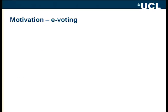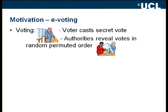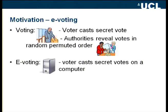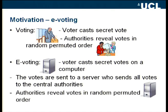I picked e-voting as motivation. We all know in a vote the voter casts secret votes, and in the evening the authority reveals the votes in random permuted order. In this e-voting scheme, the voter casts votes on a computer and sends them to a server, which sends all votes to a central authority that reveals them in random permuted order.